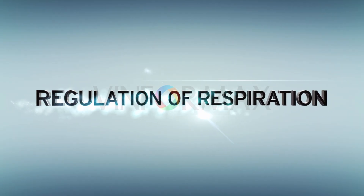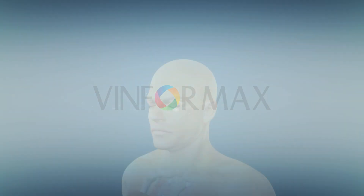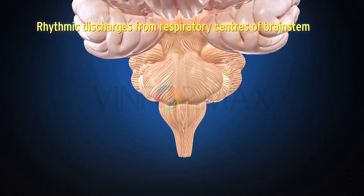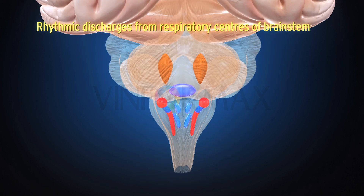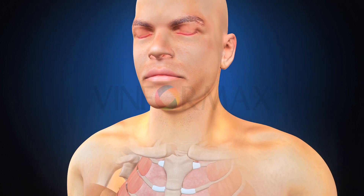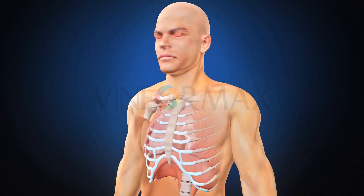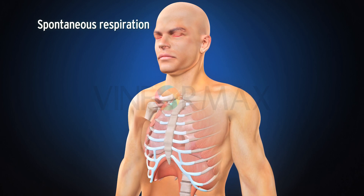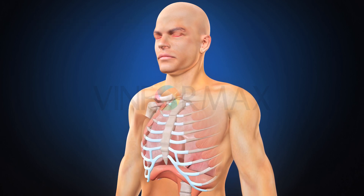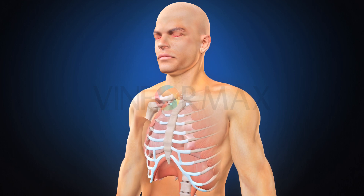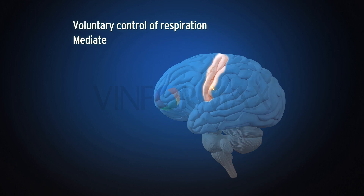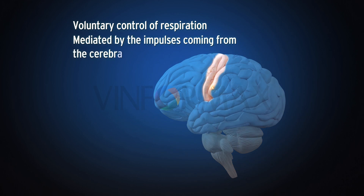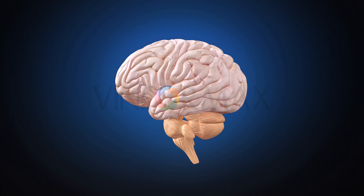Regulation of Respiration. Rhythmic discharges from neurons present in the respiratory centers of the brainstem lead to spontaneous respiration. These discharges stimulate the motor neurons that innervate muscles of respiration. The voluntary control of respiration is mediated by impulses coming from the cerebral motor cortex onto the brainstem respiratory centers.